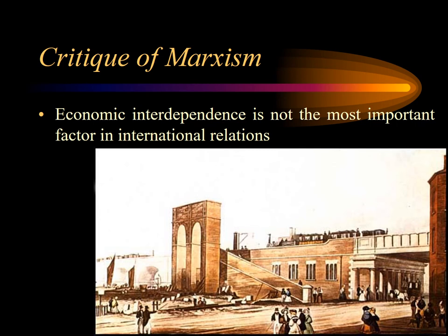The critique of Marxism: economic interdependence is not the most important factor in international relations — strategic and nationalist issues typically matter more. The problem with Lenin's argument is that the major capitalist powers cooperated in their exploitation of the colonies. In 1884 and 1885, at the Berlin Conference, the European states, without violence, cooperated in the division of the colonies in Africa. The principal disputes were not in the colonies, but in Europe — specifically between France and Germany over Alsace and Lorraine.